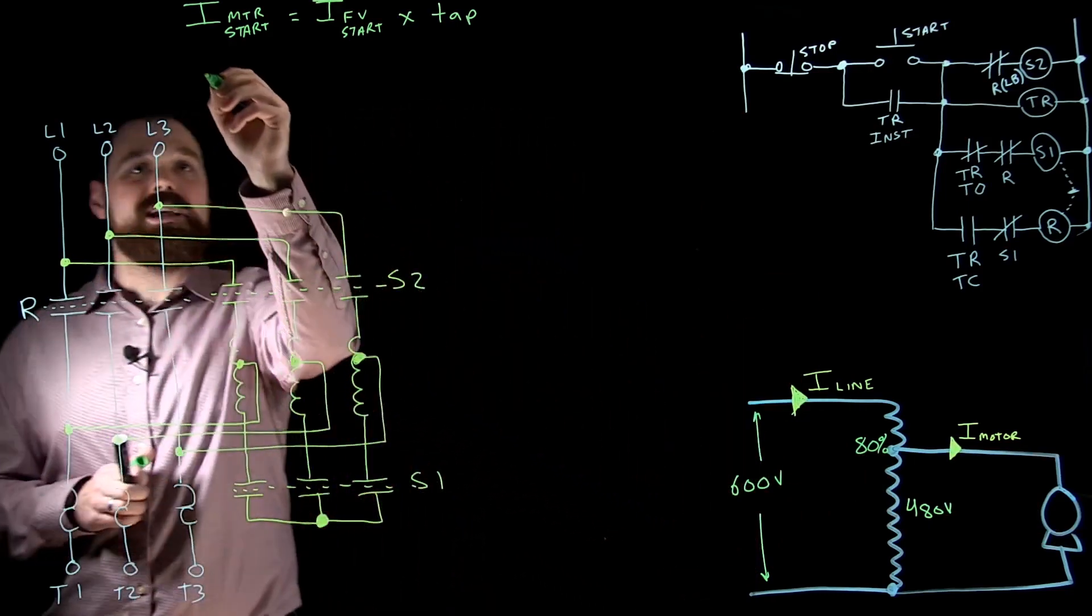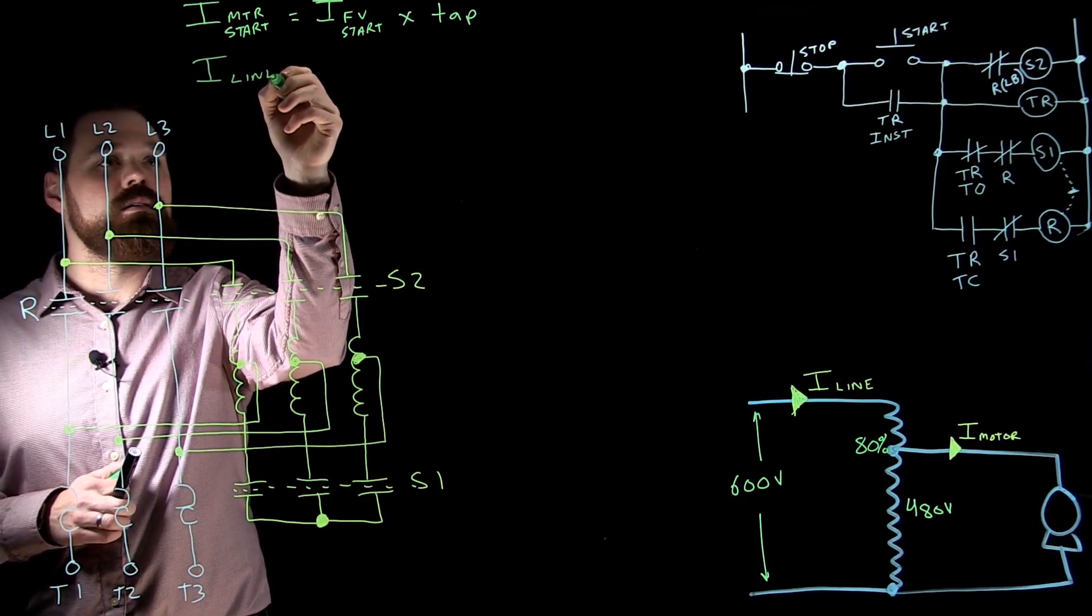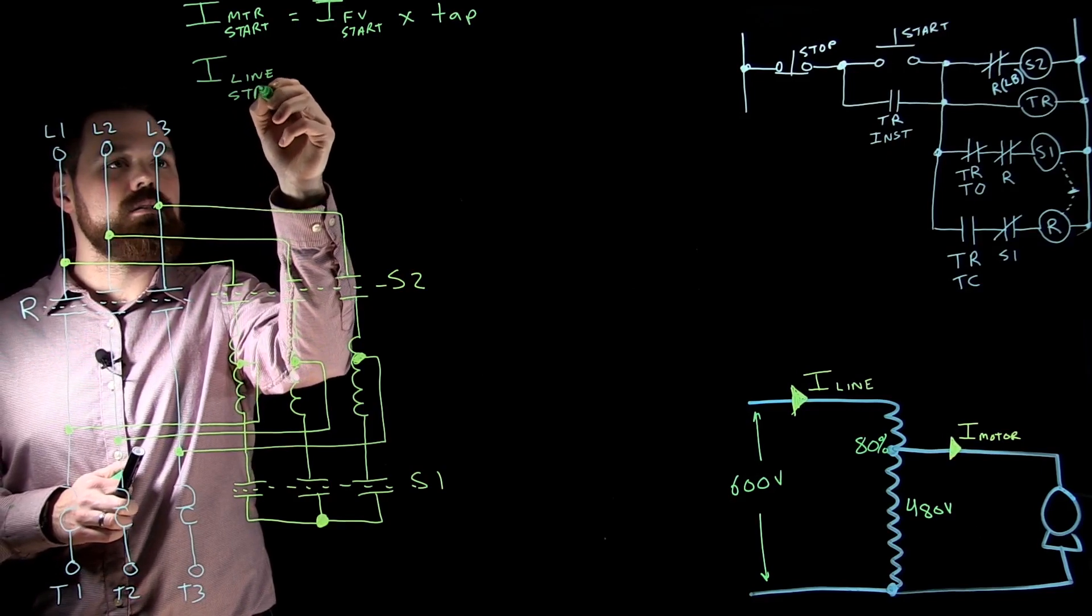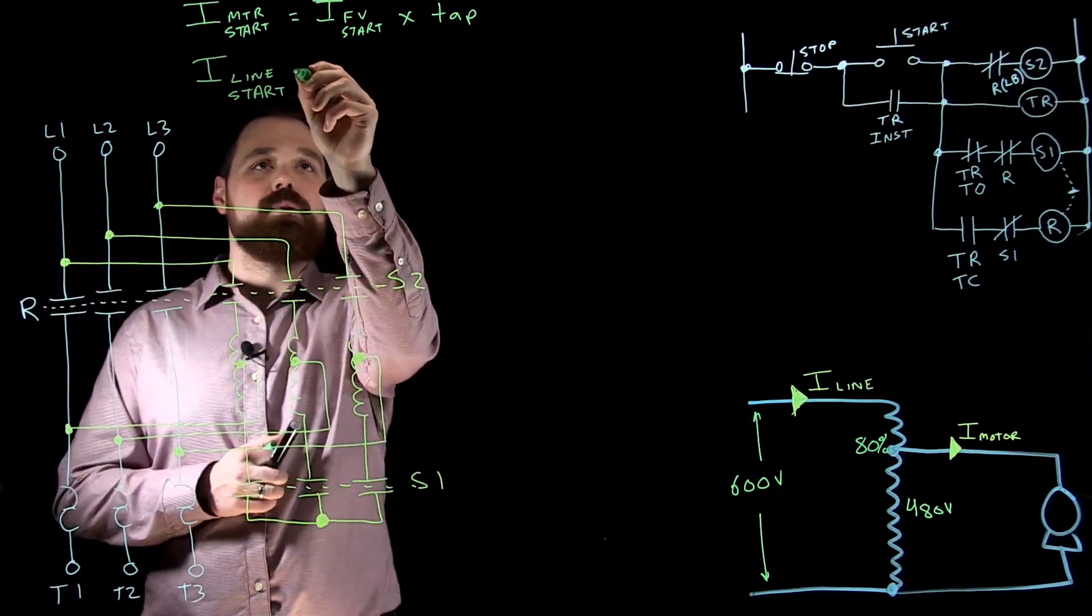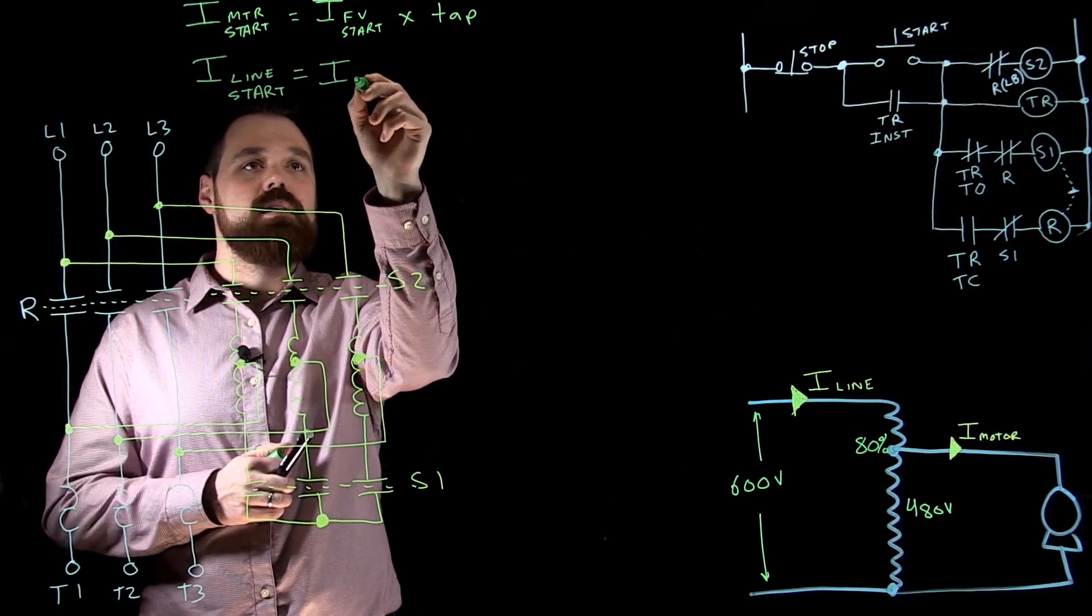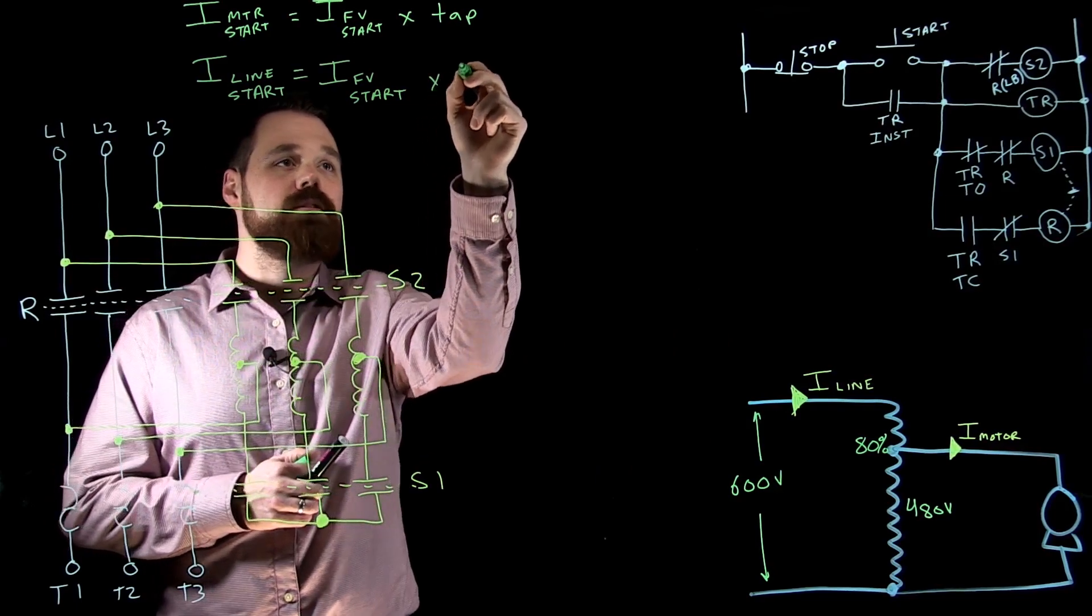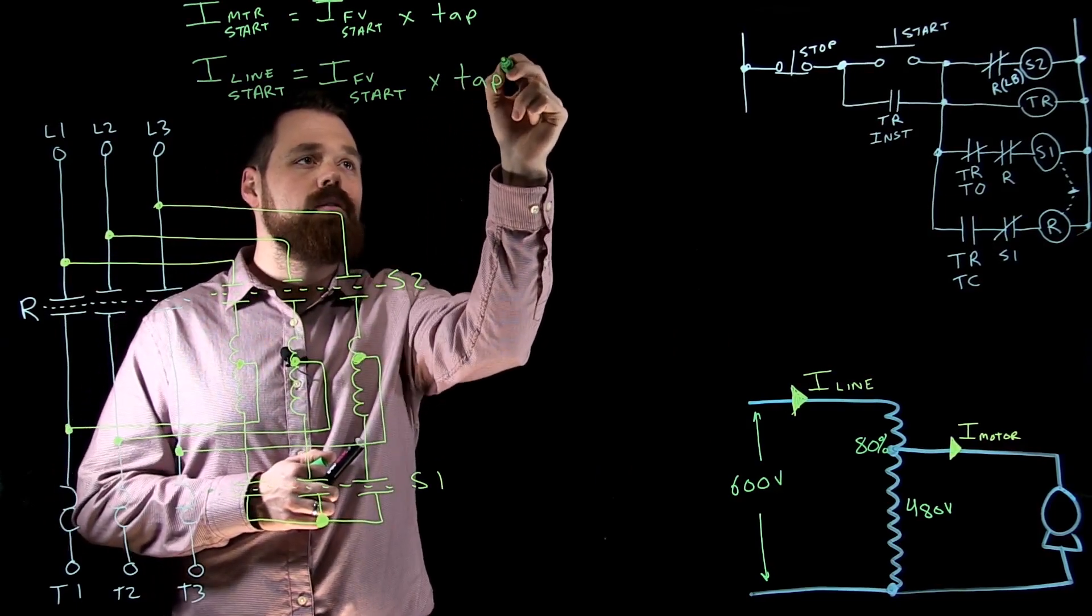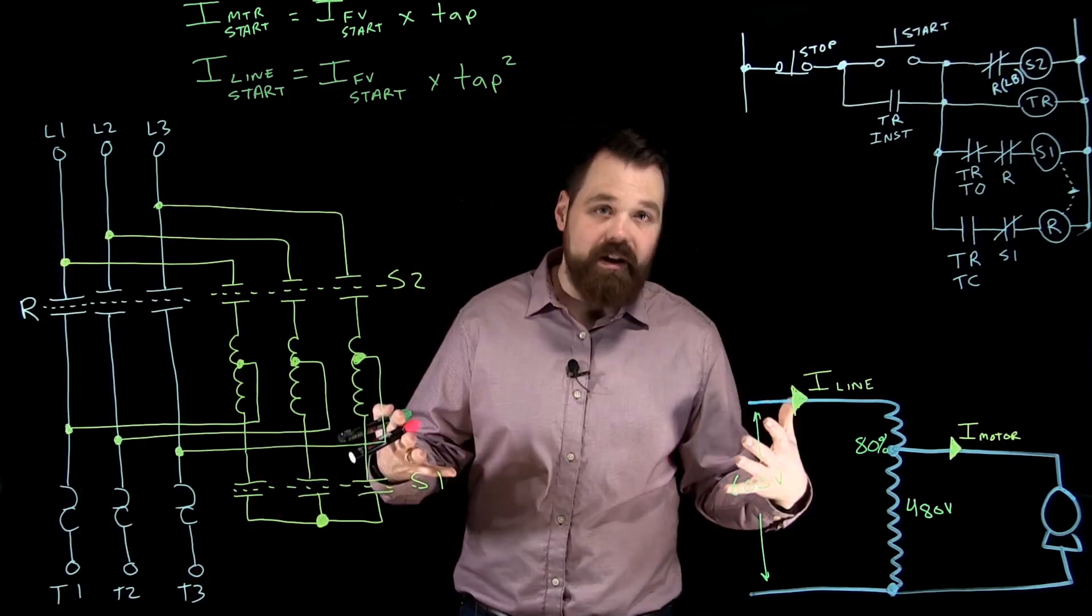So our I line at start is going to actually see a double reduction. We can take our I full voltage start times our tap squared.